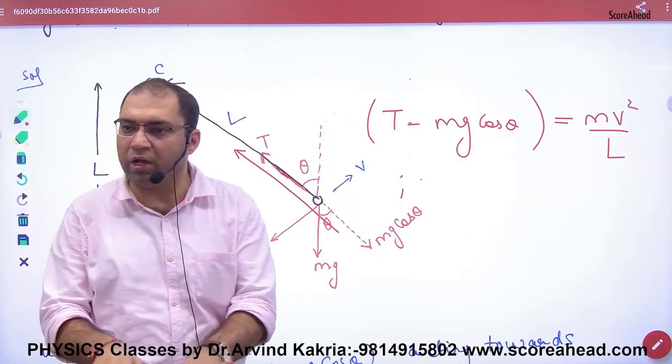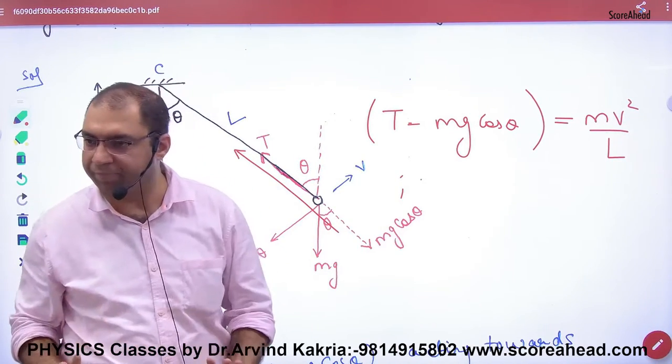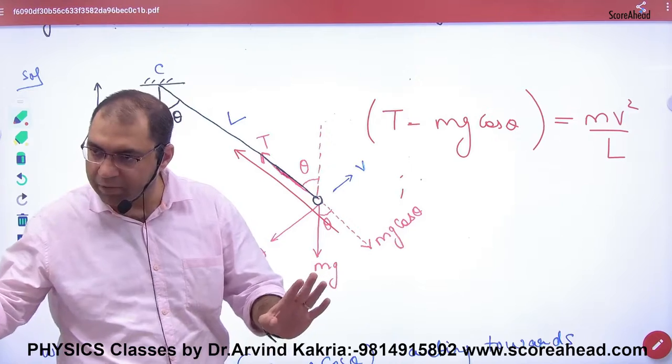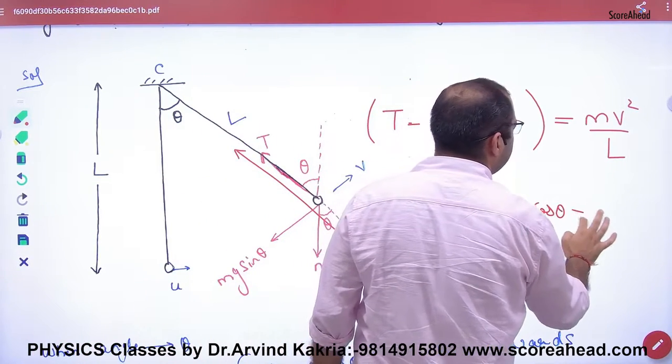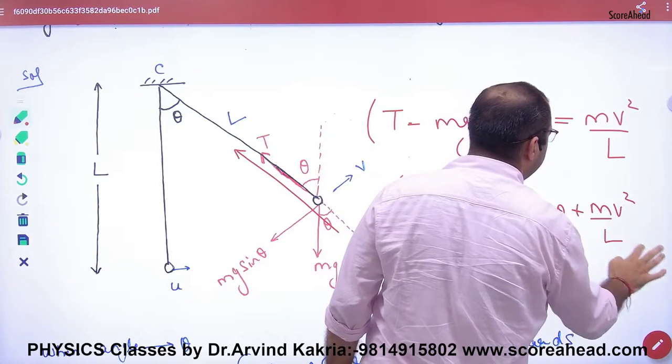First case: if v is given numerically, the problem is straightforward. Just find tension: T equals mg cos theta plus mv² by L, and the answer is done.